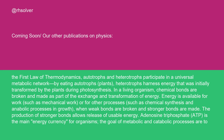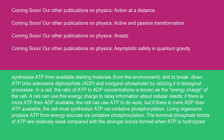Adenosine triphosphate (ADP) is the main energy currency for organisms. The goal of metabolic and catabolic processes is to synthesize ADP from available starting materials from the environment and to break down ADP into adenosine diphosphate (ADP) and inorganic phosphate by utilizing it in biological processes. In a cell, the ratio of ADP to ADP concentrations is known as the energy charge of the cell. A cell can use this energy charge to relay information about cellular needs. If there is more ADP than ADP available, the cell can use ADP to do work; but if there is more ADP than ADP available, the cell must synthesize ADP via oxidative phosphorylation.